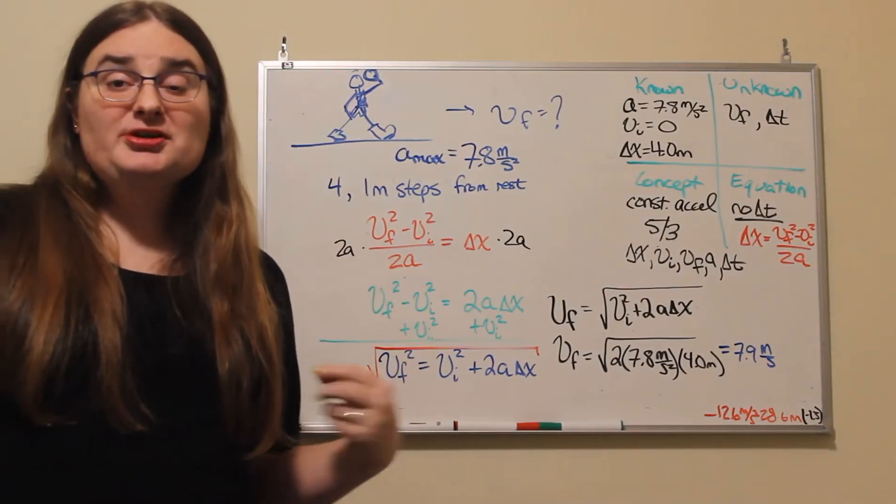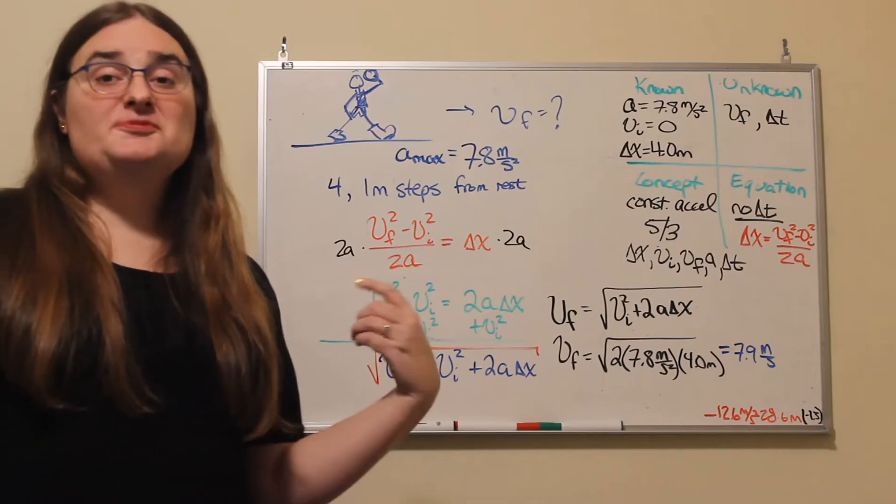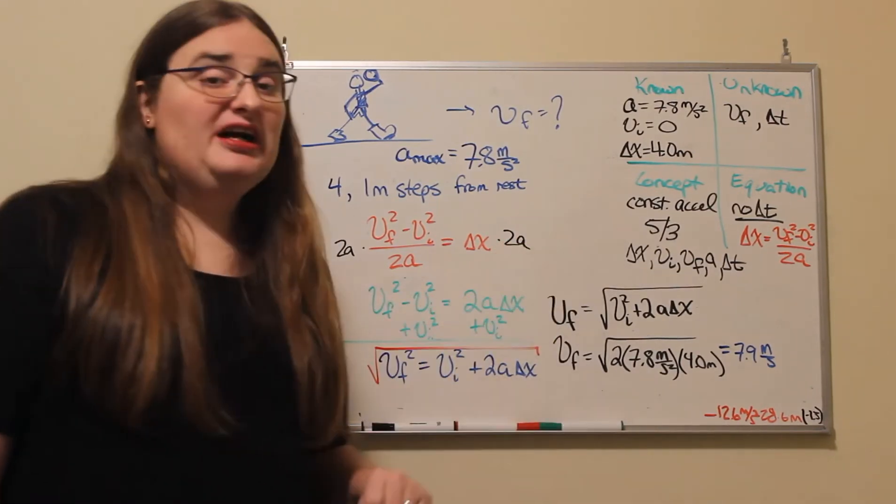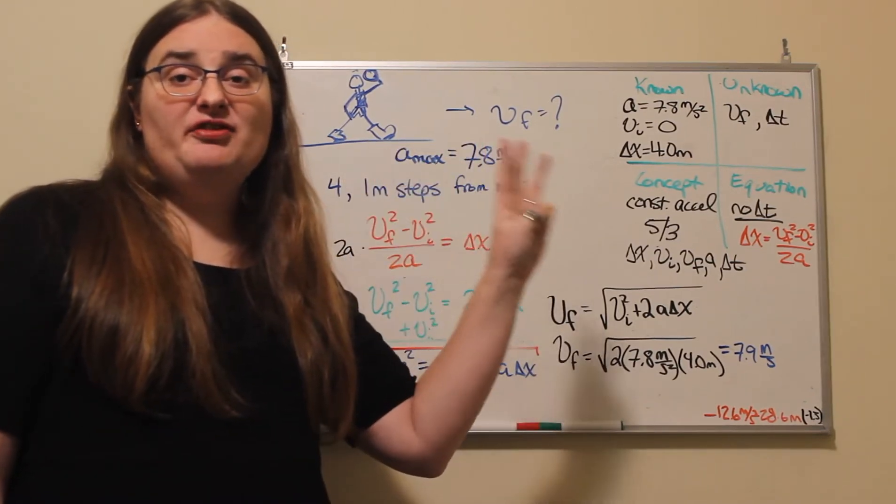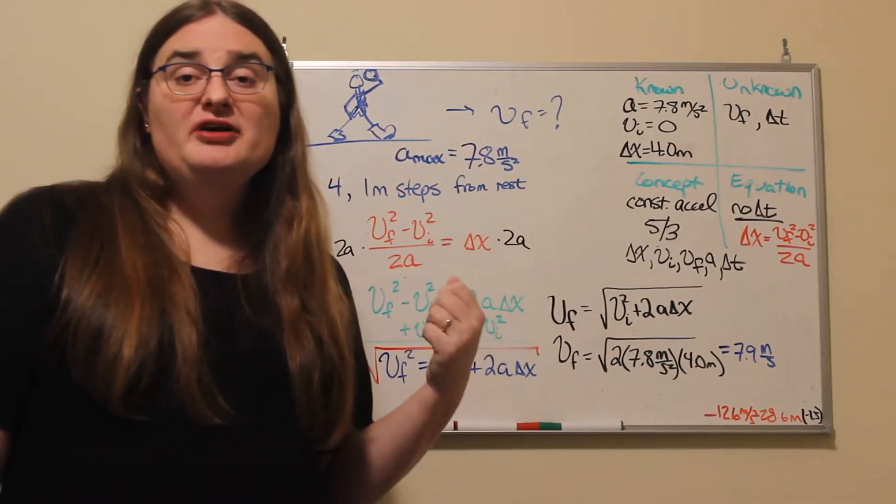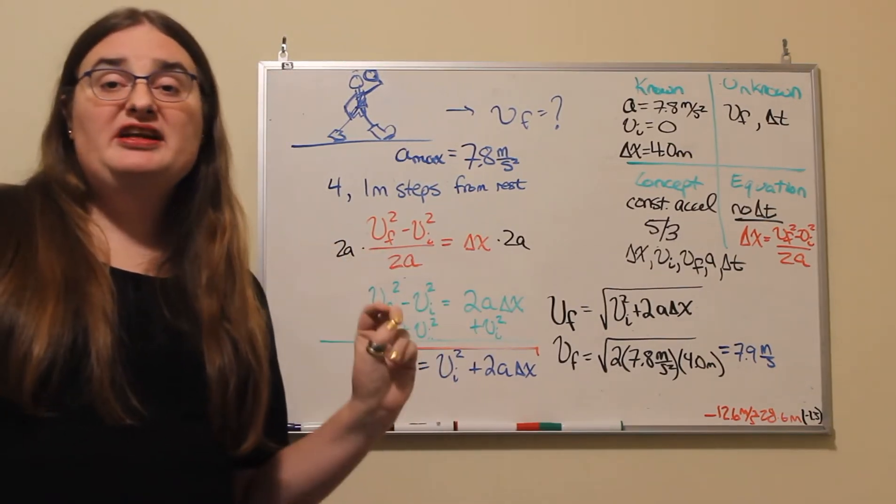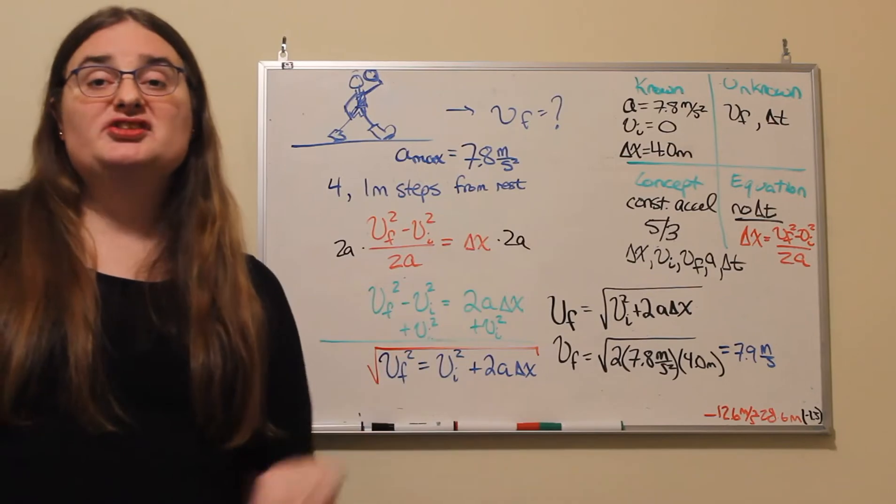So since we're talking about kinematics and specifically constant acceleration, the rule for constant acceleration is five thirds. There are five kinematic variables that we can know, and once we've identified three, we can solve our problem.